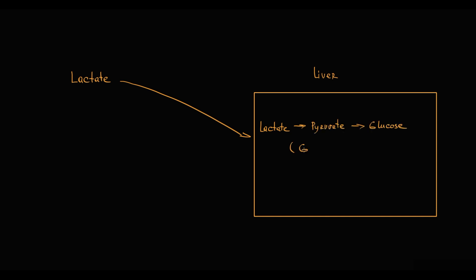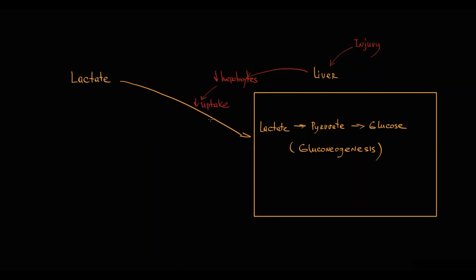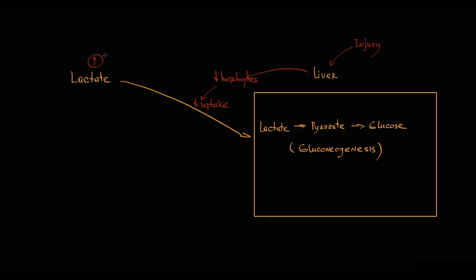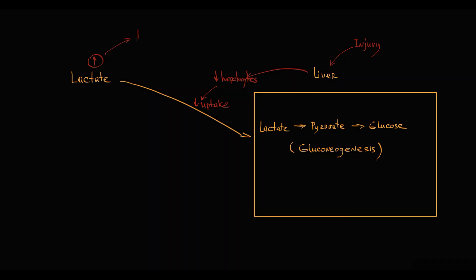This process is called gluconeogenesis. With liver injury, hepatocyte quantity decreases. Thereby, intake of lactic acid decreases, resulting in elevation of lactic acid level in blood. Lactate makes blood pH more acidic, so that's how lactic acidosis develops.